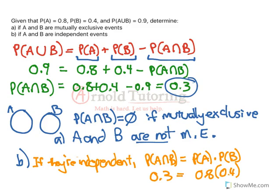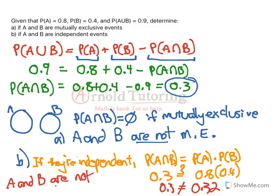I'll put a question mark above. And clearly, they are not. 0.3 is not equal to 0.8 times 0.4, which is 0.32. So these events, A and B, are not independent either.